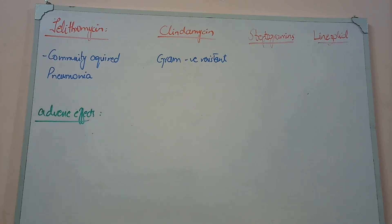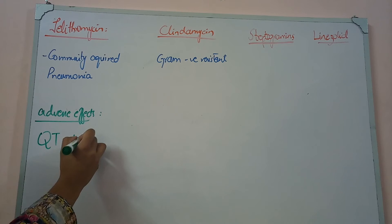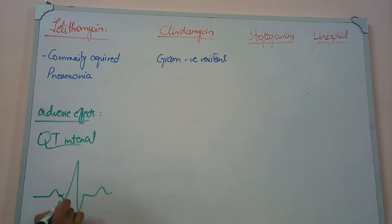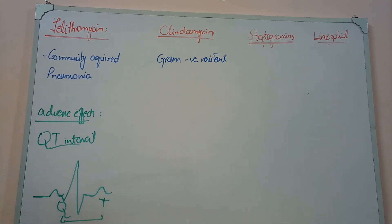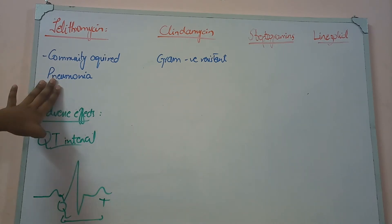For telithromycin, the important adverse effect to remember is that it prolongs the QT interval of the heart. In ECG, we have the QT interval, QRS, and T wave — the Q and P intervals. This QT prolongation is a key adverse effect to remember. Regarding resistance, the bacteria that develop resistance against telithromycin produce less resistance compared to other antibiotics, which is why this resistance remains clinically relevant.